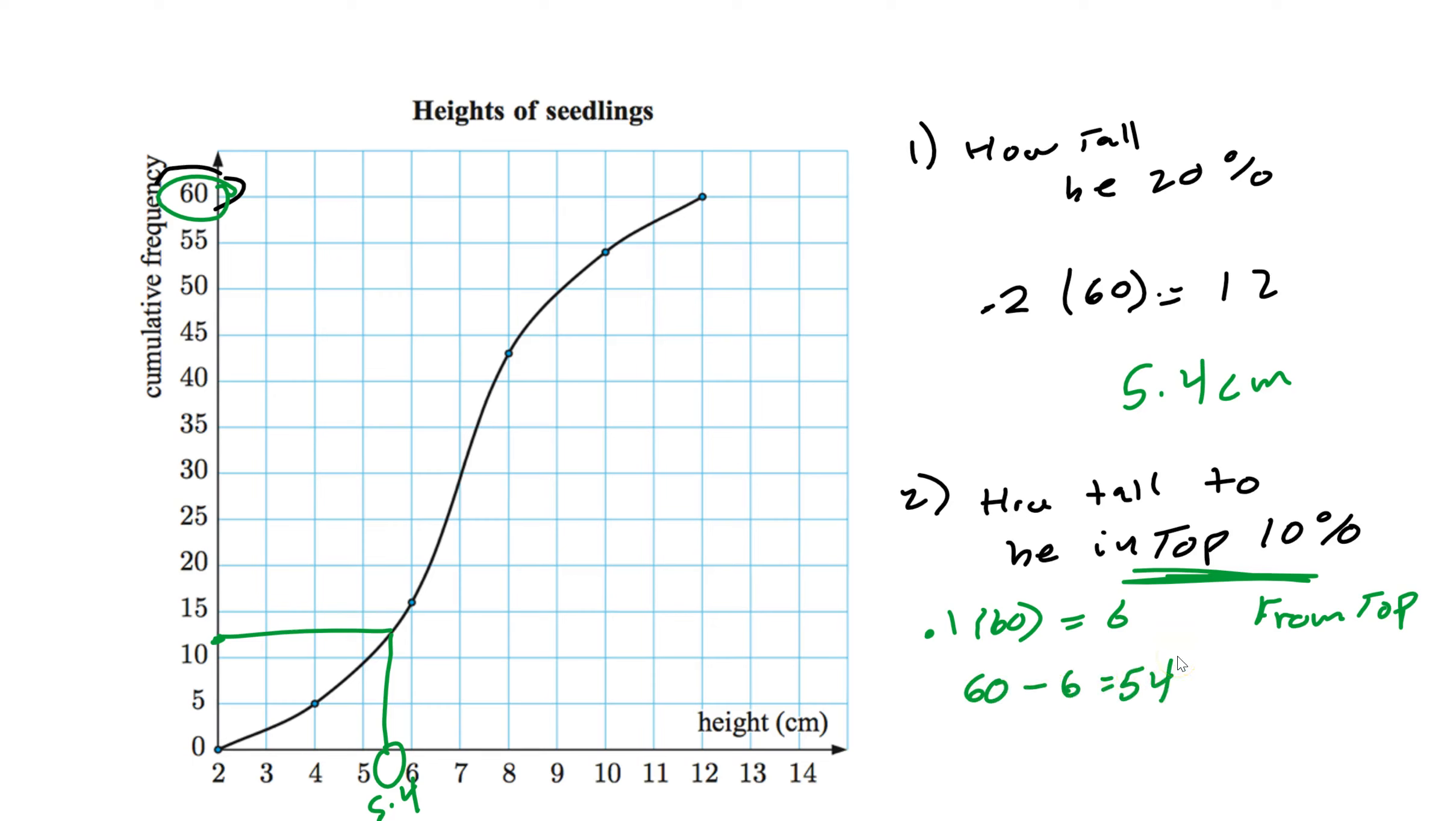And again, 54 is not your answer. You go to 54, you've got to use the graph. You never do this without using the graph. Go to 54, go across, go down. It looks like about 10. So top 10 percentile would be about the height of 10 centimeters.